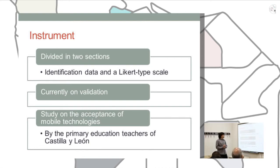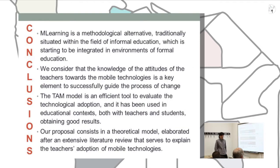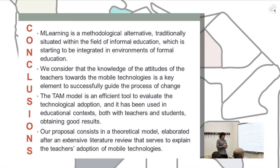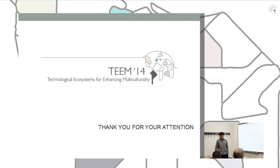We have developed an instrument divided into sections: one for identification data of the participants, and another composed of a Likert-type scale to measure the constructs. This instrument is currently being validated, and after validation is complete, we will use it to perform a study of the acceptance of mobile technology by primary education teachers. In conclusion, mobile learning is a methodological alternative traditionally situated in the informal field of education that is starting to be integrated into the formal field. Teachers play a key role in this integration, and our proposal — a theoretical model elaborated through a systematic literature review — can serve to explain teachers' adoption of mobile technologies. Thank you for your attention.